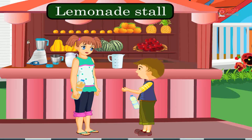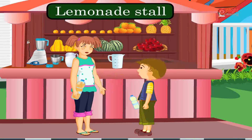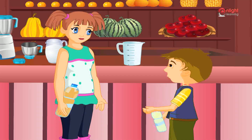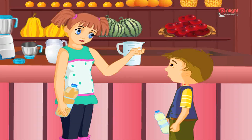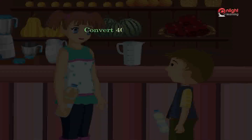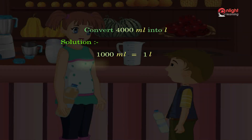What should we do to convert milliliters to liters? Then we should divide the milliliters by one thousand. For example, convert 4000 milliliters into liters: 4000 milliliters divided by 1000 is equal to 4 liters.